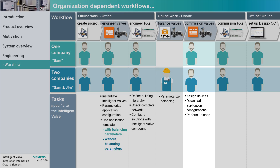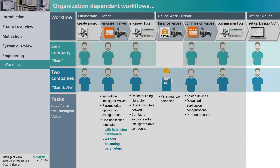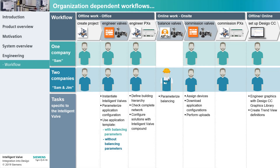Now the primary automation stations need to be set up for the remaining applications. To complete the workflow, SAM integrates the project data into Dizigo CC and engineers the graphics and trending applications. For more detailed information, please refer to the engineering instructions and the corresponding workflow videos.